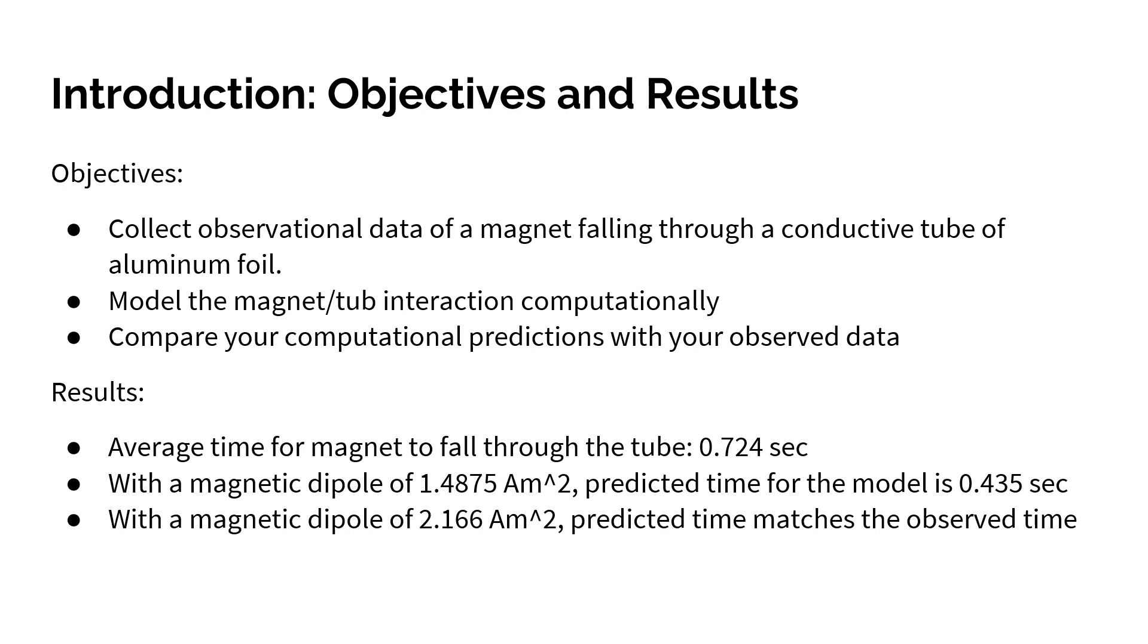The results of this lab include: average time for the magnet to fall through the tube being 0.724 seconds; with a magnetic dipole of 1.4875 ampere-meters squared, predicted time for the model is 0.435 seconds; and with a magnetic dipole of 2.166 ampere-meters squared, predicted times match the observed times.